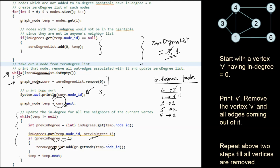In the second iteration of the while loop, vertex 1 is removed from the zero-degree list and printed. For all neighbors of 1 — that is 4, 2 and 6 — in-degrees are decremented by 1. So 4's in-degree becomes 0, 2's in-degree becomes 1, and 6's in-degree becomes 0. Because the in-degree of 4 and 6 is now 0, they are added to the zero-degree list. Repeating these steps until the zero-degree list is empty gives us the topologically sorted order: 3, 1, 4, 2, 6, 5. I hope the explanation was clear. If you have any queries or feedback, please feel free to comment and do not forget to subscribe. Thank you and cheers.